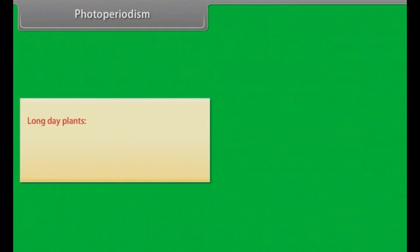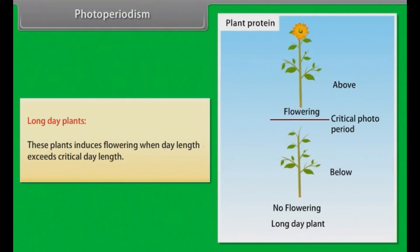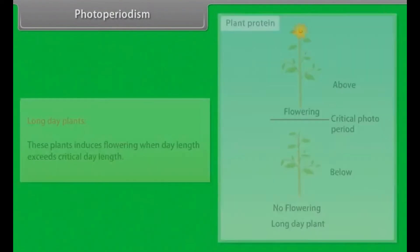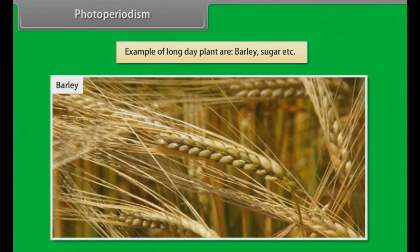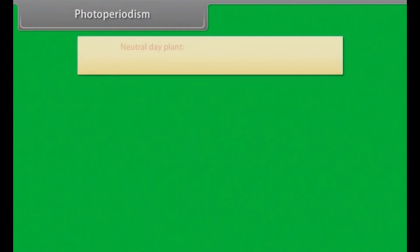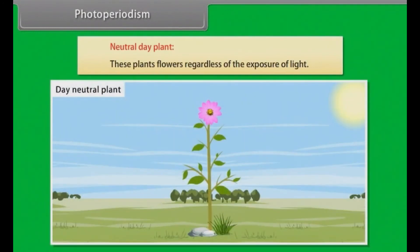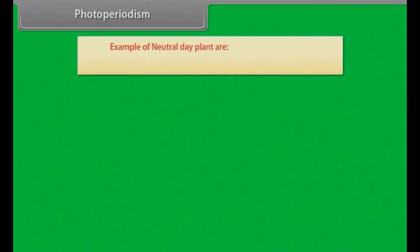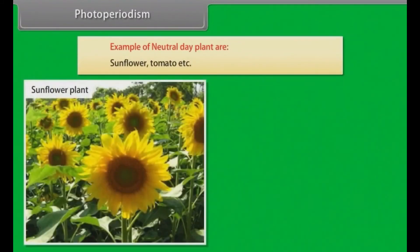Long day plants: these plants induce flowering when day length exceeds critical day length. Example of long day plants are barley, sugar, etc. Neutral day plants: these plants flower regardless of the exposure of light. Example of neutral day plants are sunflower, tomato, etc.